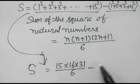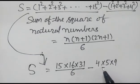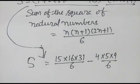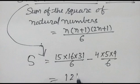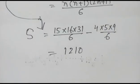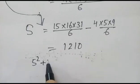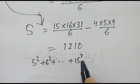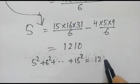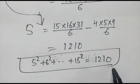After calculating, we get 1210. So the sum of the series 5 squared plus 6 squared plus up to 15 squared is equal to 1210.